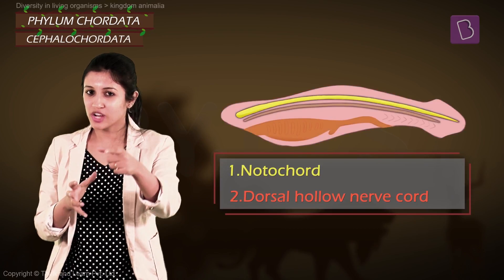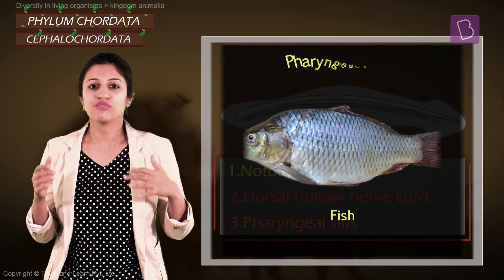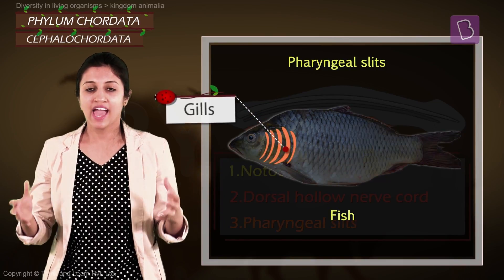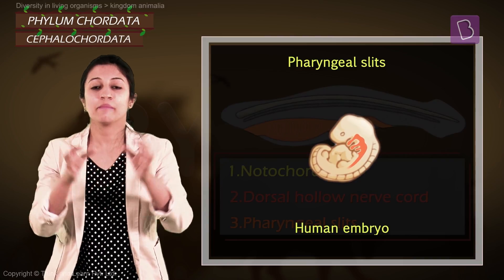The next thing that you need to look out for are the pharyngeal slits. In notochords they just filter food, in fish they develop like gills, and in us, well surprise surprise, we have them too but they disappear before we are born.